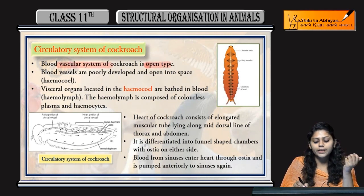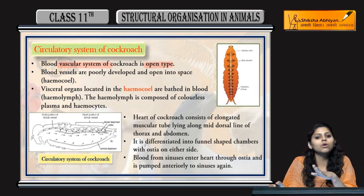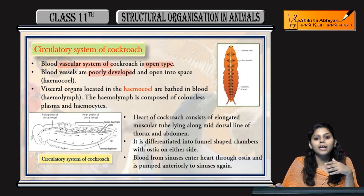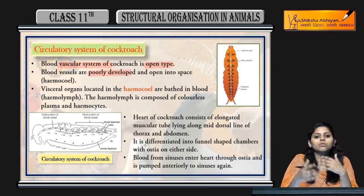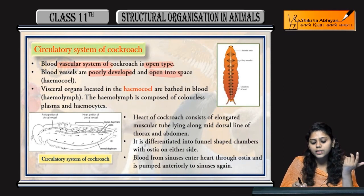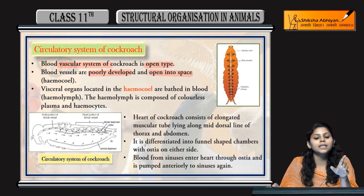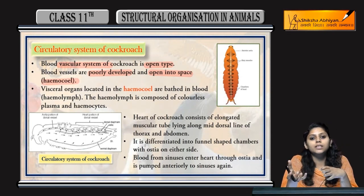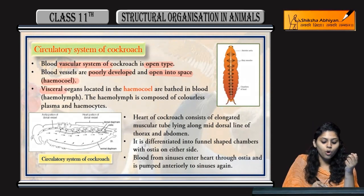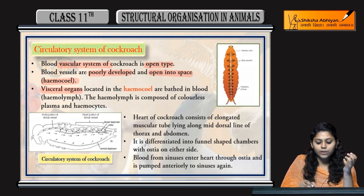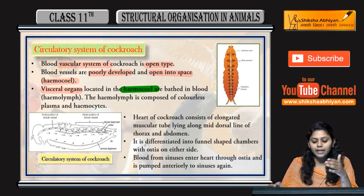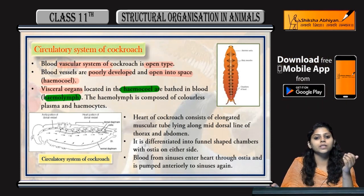The blood vascular system of cockroaches is open type. Open type means the blood vessels are not fully developed — acchhe tariqe se develop nahi hai. The blood flows and circulates through spaces; these blood vessels open into a space called the hemocoel. Visceral organs are located in the hemocoel.